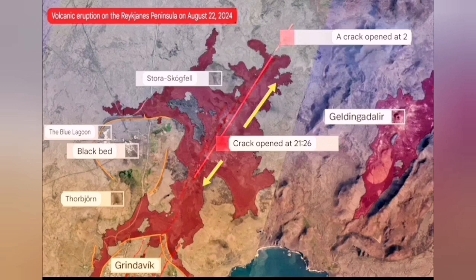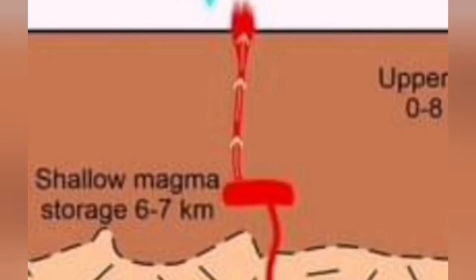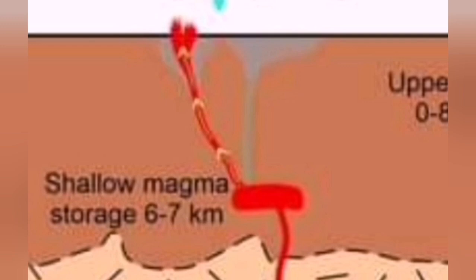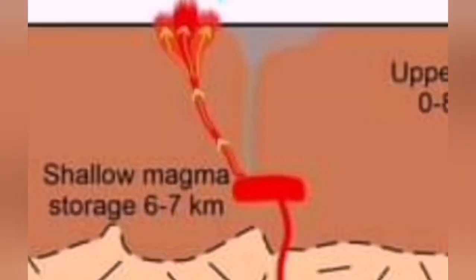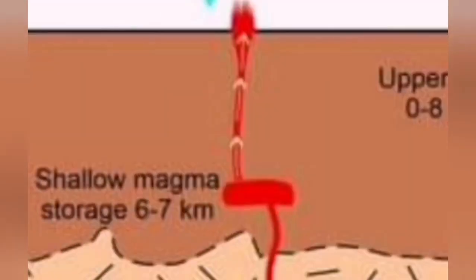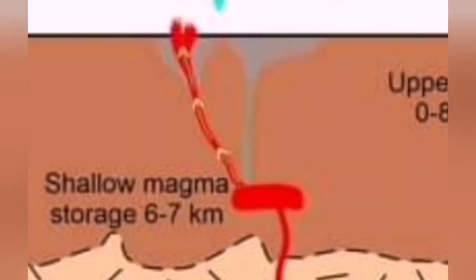It spread slightly to the south, but then that pathway was closed — the fissure closed — and then moved toward the north. And this is where it is erupting at the moment.